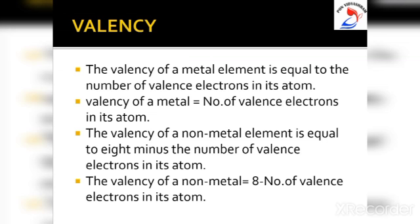There is one exception to this rule: the valency of hydrogen. The valency of hydrogen is equal to the number of valence electrons, which is 1.